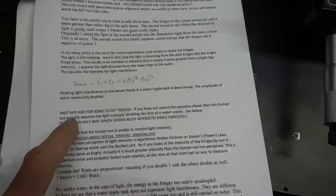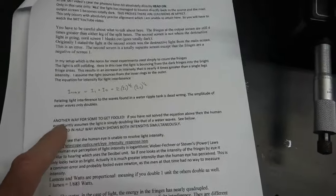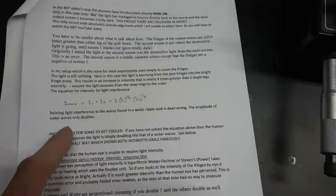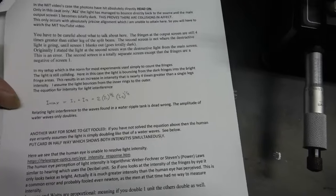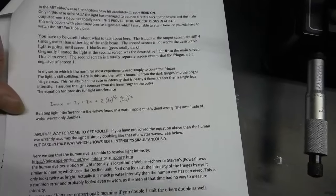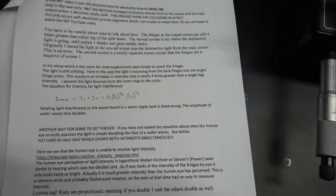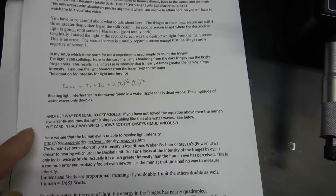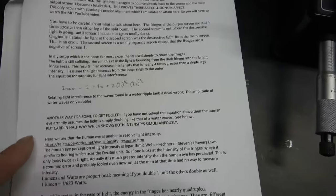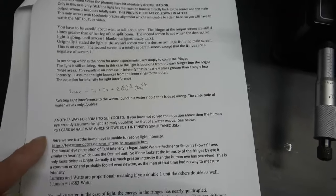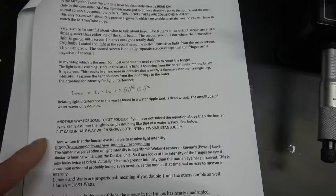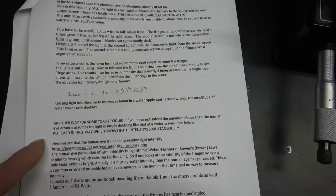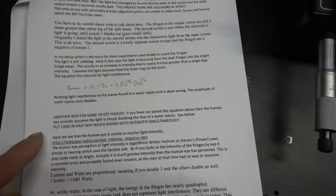Another way for some people to get fooled is relating light interference to the waves found in a water ripple tank is dead wrong. The amplitude of a water wave only doubles. Another way to get fooled? If you've not solved the equation above, then the human eye errantly assumes the light which is doubling is like that of water waves.